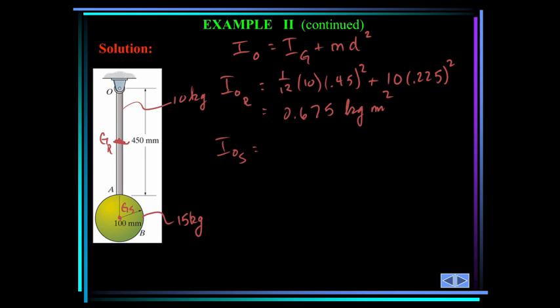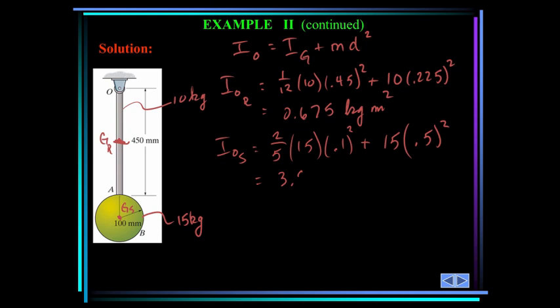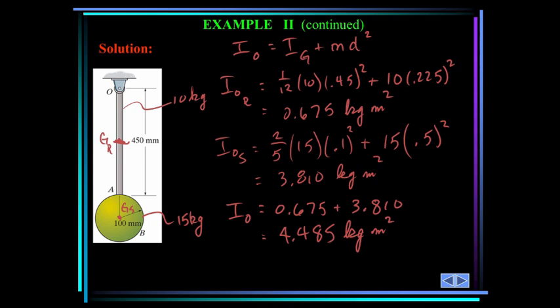For the sphere, I about O: the moment of inertia of a sphere about its center is two-fifths times mass times radius squared. So, two-fifths times 15 times 0.1 squared. Then transferring to point O, we add the mass of the sphere, 15, times the distance between G sub S and point O, 0.5 meters, so 0.5 squared. This equals 3.810 kilogram meter squared. The moment of inertia about point O for this composite body is the sum of those two, which is 4.485 kilogram meter squared.